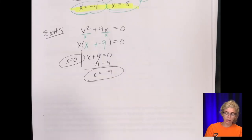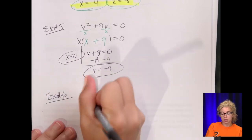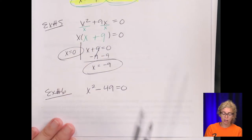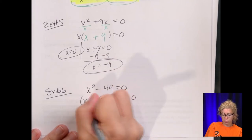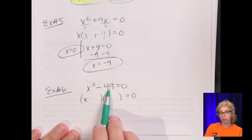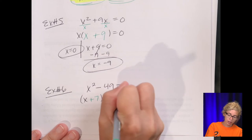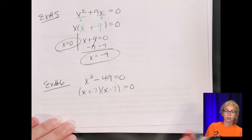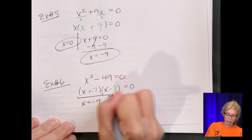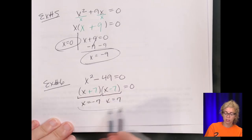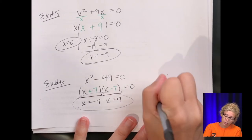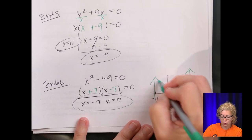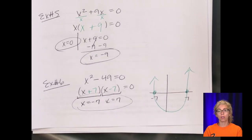Let's do one last type of factoring: x squared minus 49 equals zero. There's no GCF here, so we set up our two parentheses: x and x. The two factors that multiply to negative 49 but add to zero — because there's no middle term — are plus 7 and minus 7. Skipping the intermediate step, we get a root of negative 7 and a root of positive 7. The roots are where the graph crosses the x-axis — negative 7 on the left, positive 7 on the right, and the parabola opens upward.